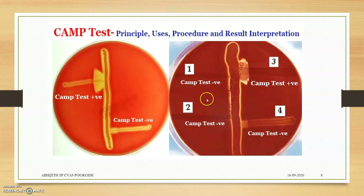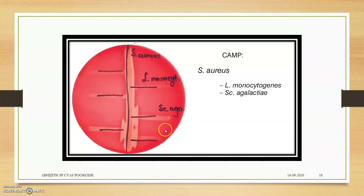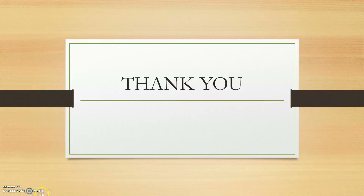Here are pictures of the CAMP test. This shows a CAMP test negative result with no arrowhead. For a CAMP test positive result, there is an arrowhead zone of hemolysis — here Streptococcus agalactiae is enhancing the hemolysis produced by Staph aureus. This image shows Listeria monocytogenes positive, and this one shows Listeria ivanovii and Rhodococcus equi. Thank you.